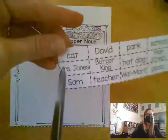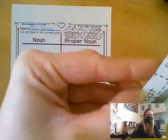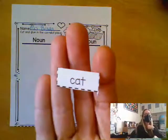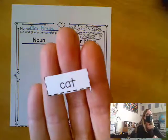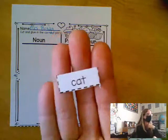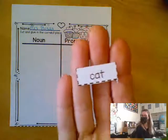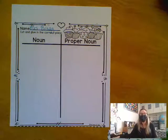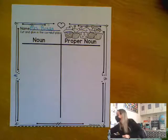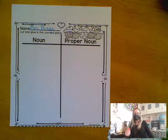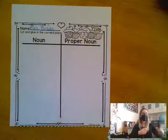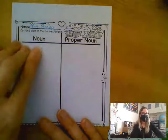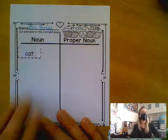So let's take a look at the first word. The first word is cat. I have a cat at my house. Looking at the word cat, is that a common noun or a proper noun? Johnny? It is a noun — is it common or proper? Yeah, it's common. It's not a specific cat. I didn't say I have a cat at home named Chuck, which I do, by the way. I just said I have a cat at home. So I'm going to put a little bit of glue on the back of cat and stick cat in this column because this is the column for common nouns.